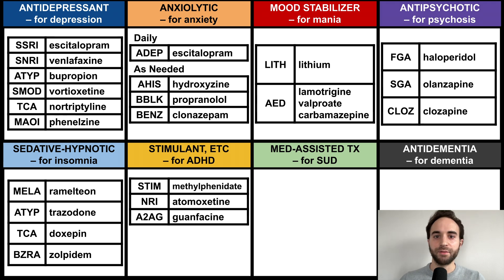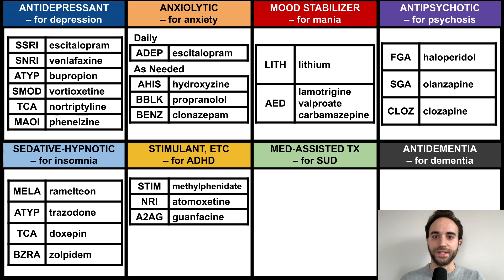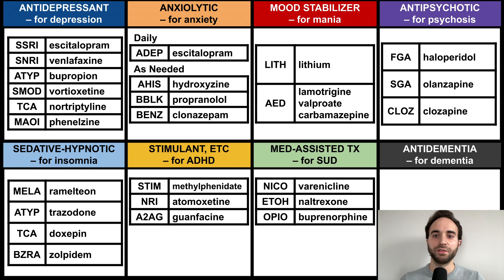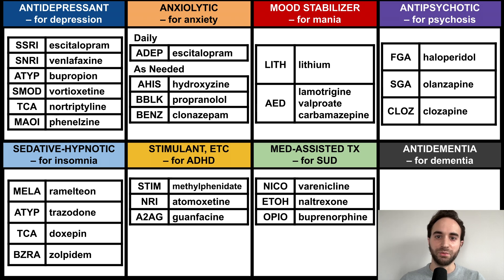Next are the stimulants and related non-stimulant medications used to treat ADHD symptoms, including norepinephrine reuptake inhibitors and alpha-2 agonists. Next are medications used to treat substance use disorders, commonly referred to as medication-assisted treatment. These medications exert their therapeutic effects by agonizing or antagonizing receptors that substances of abuse typically bind to, such as nicotine and opioid receptors.